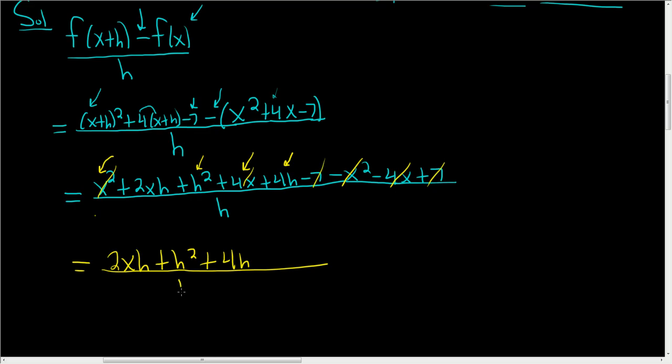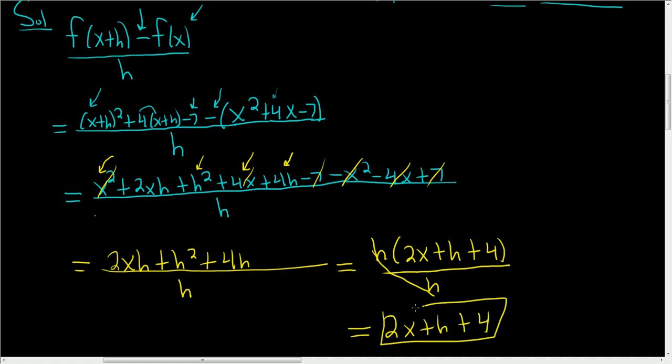So all of this is being divided by little h. In the next step, we factor out the h. So we end up with 2x plus h plus 4, and it's all being divided by h. And the very last step is to cancel these h's. And you end up with 2x plus h plus 4. And that is the final answer. So that's how you compute a difference quotient. I hope this helps.